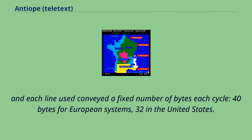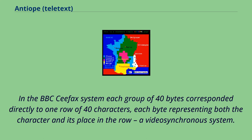Each line used conveyed a fixed number of bytes each cycle: 40 bytes for European systems, 32 in the United States. In the BBC CFAX system, each group of 40 bytes corresponded directly to one row of 40 characters, each byte representing both the character and its place in the row — a video-synchronous system.